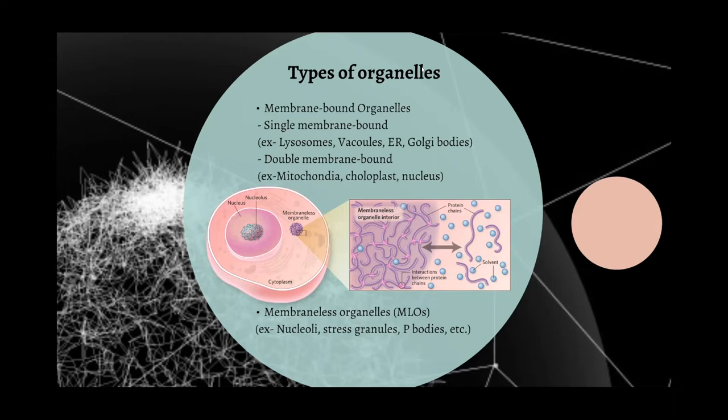Coming to the main focus of my project: the other type of organelles are membrane-less organelles, abbreviated as MLOs. As the name suggests, they are not surrounded by a membrane. The question arises: how are the contents within them confined, and what contents are actually present?